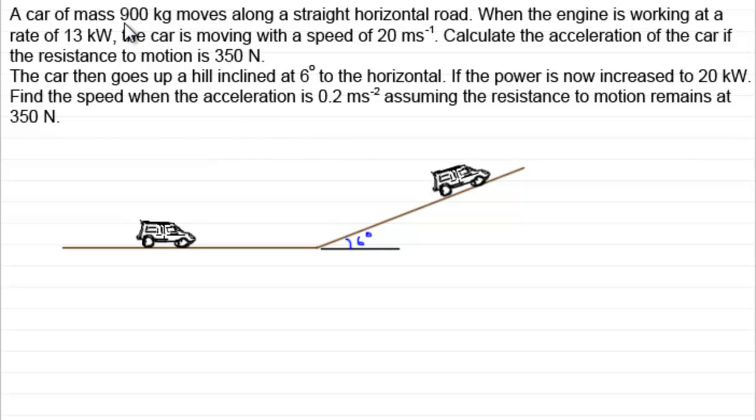We've got a car of mass 900 kilograms and it moves along a straight horizontal road and when the engine is working at a rate of 13 kilowatts the car is moving with a speed of 20 meters per second. What we've got to do is calculate the acceleration of the car if the resistance to motion is 350 newtons. The second part talks about the vehicle going up an inclined plane here but we'll look at that in a moment.